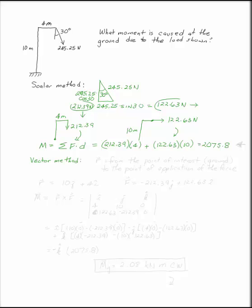To use the vector method, your r vector goes from the point of interest, which in this case is the ground, to the point of application of the force. So in this case, r is 10j plus 4i. F, we need in its Cartesian component form as well.